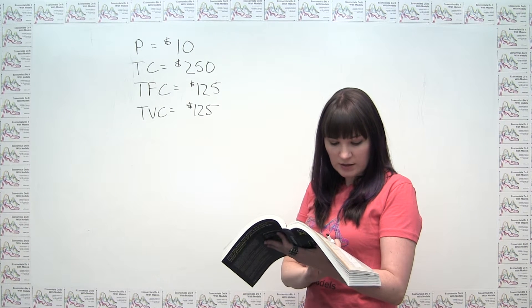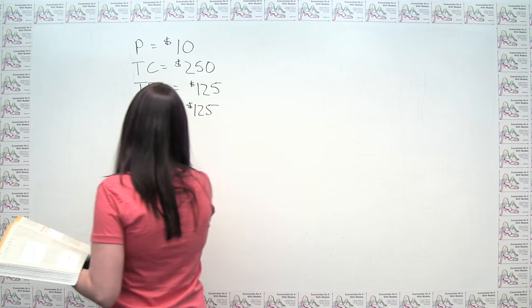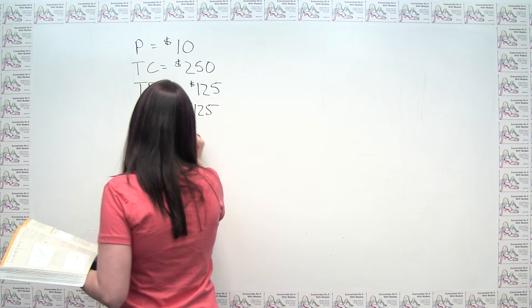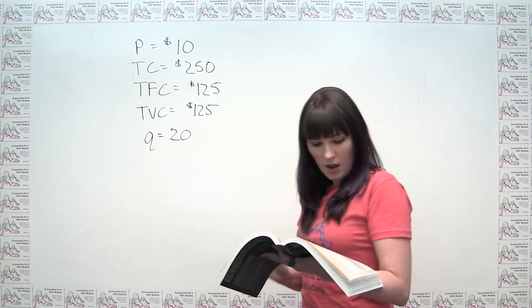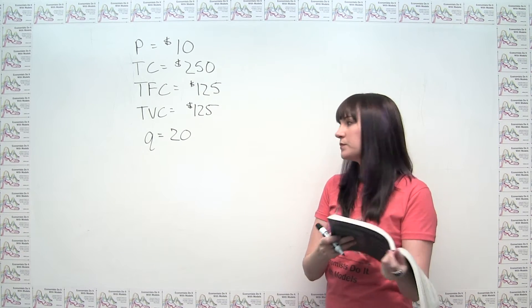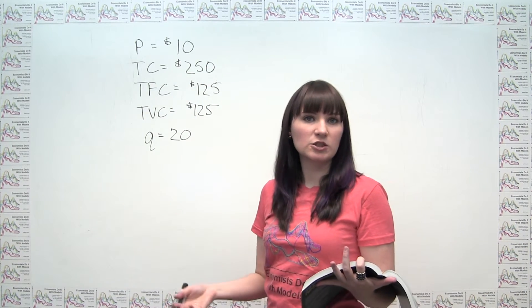It says, if Barney clears 20 driveways a day, so now we know that his profit-maximization quantity is 20. And the problem says, should he continue to operate or shut down? So what we're doing is really we have an instance of the shutdown condition.